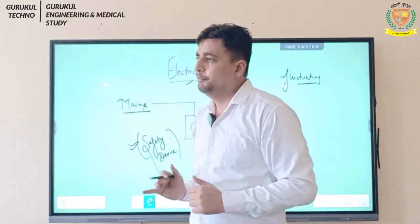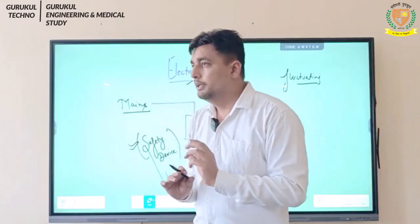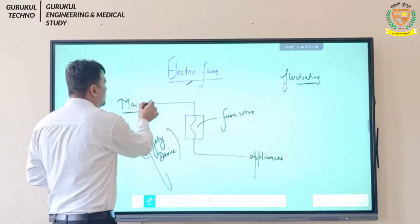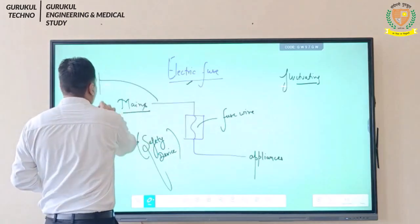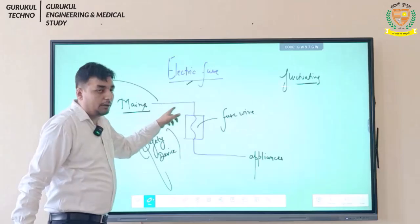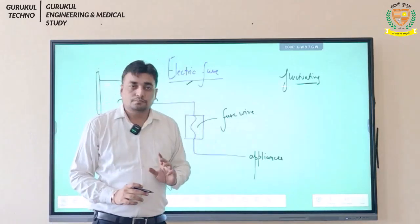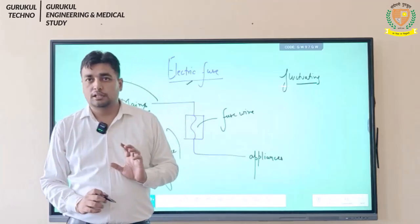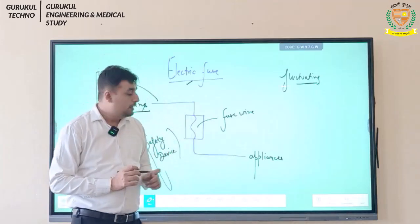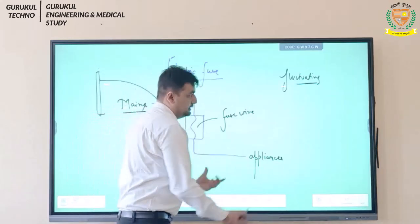We put the fuse inside the mains. The electricity comes from outside through the electric pole via a wire, that wire goes into your mains. We put the fuse inside there. There is a wire inside the fuse, and from there the current goes on to your different appliances.